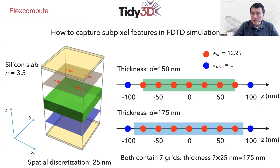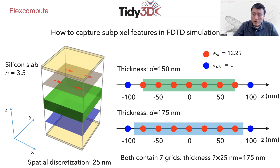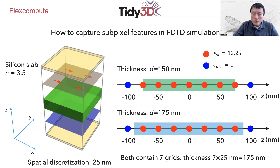This continues from the discussion in the previous tutorial, where we emphasized that in FDTD, it is very important to understand how the dielectric function is actually distributed on a grid. As a simple illustration, suppose you will be simulating transmission through a dielectric slab. Naturally, you would arrange the dielectric constant to reflect the thickness of the slab. Now suppose the discretization is 25 nanometers.